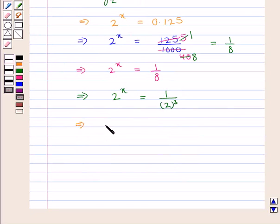Further, we can say 2 to the power x is equal to 2 to the power minus 3. So from this we conclude that x is equal to minus 3.